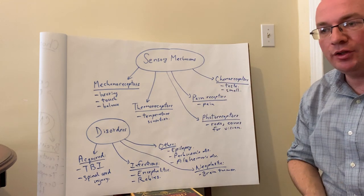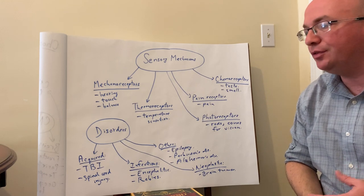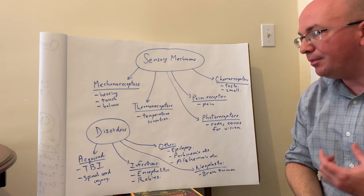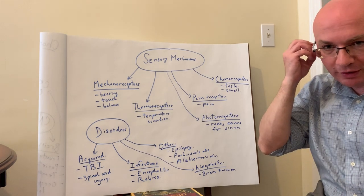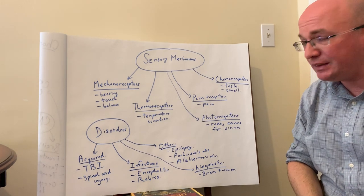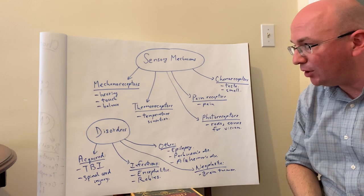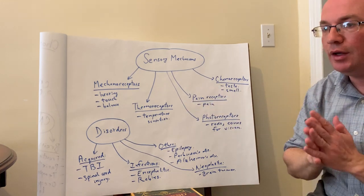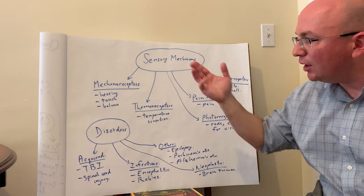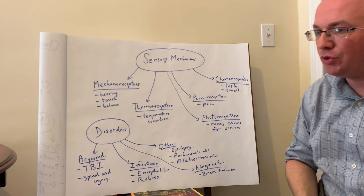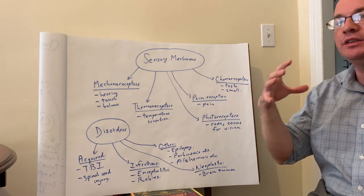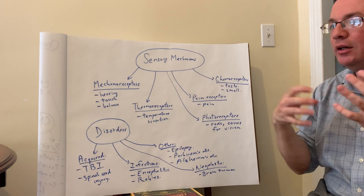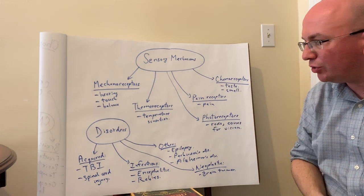Mechanoreceptors are those receptors that deal with processing of hearing and balance information, which is all found in the inner ear and will be processed in the temporal lobes. Touch information in your fingers and skin is also transmitted through mechanoreceptors. Essentially, mechanical movements occurring through the molecule transmit information to the neurons.